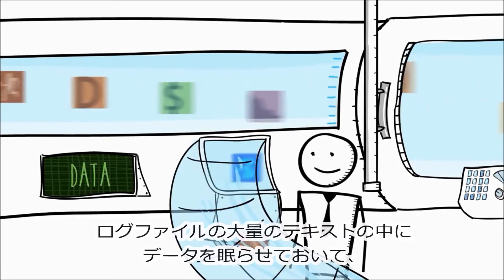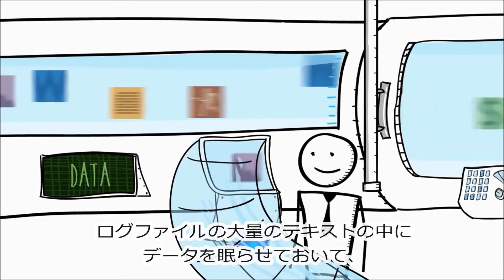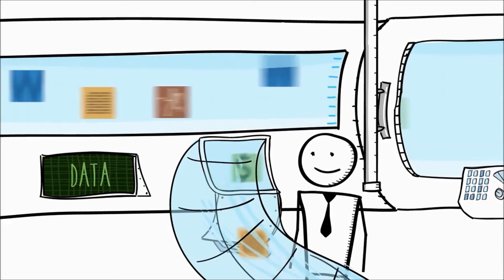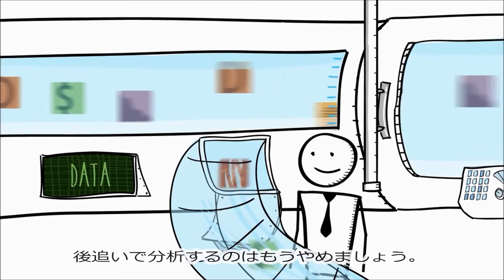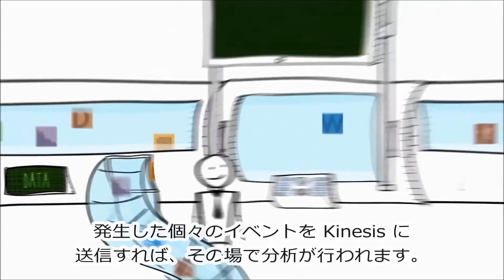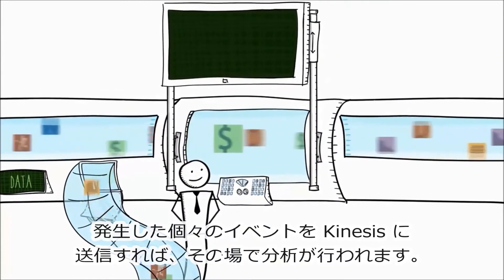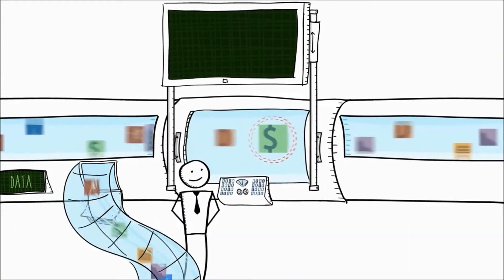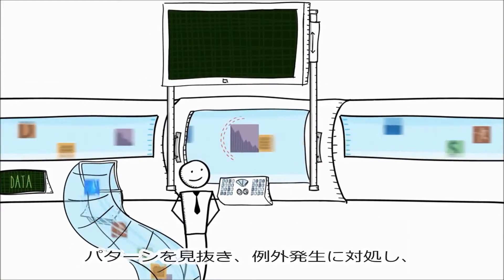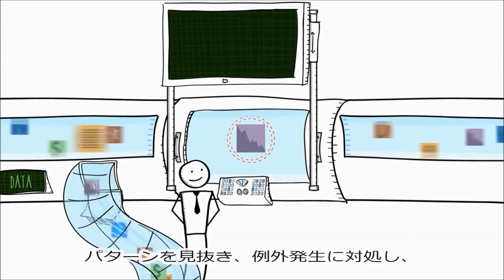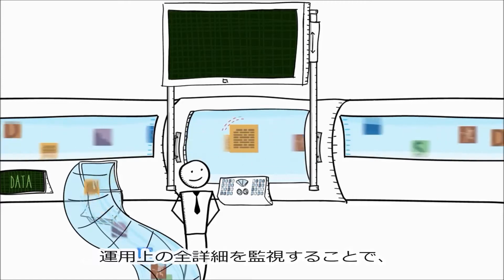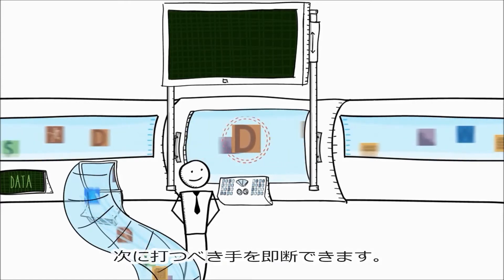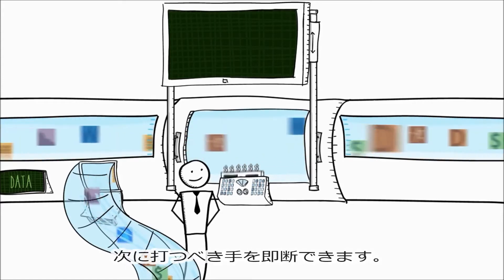So instead of having data locked away in large, text-based log files, which you keep meaning to look at later, just send each event to Kinesis and have it analyzed right away. Find patterns, trap exceptions, and keep an eye on all your operational details, taking decisive action instantly.